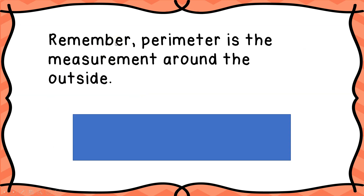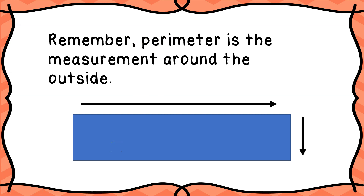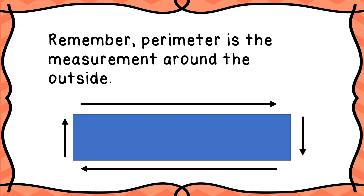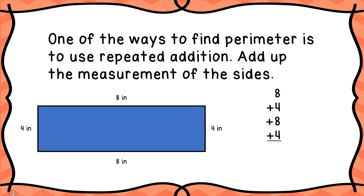When you're finding perimeter, it's the measurement around the outside. So if you look at this rectangle right here, we're going to measure the outside. See where these arrows are pointing — that is the perimeter, the entire outside of the rectangle. One of the ways to find perimeter is to use repeated addition: you add up the measurements of the sides and you'll get the perimeter.